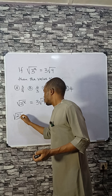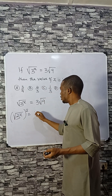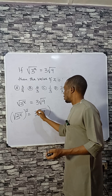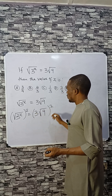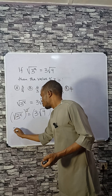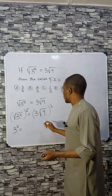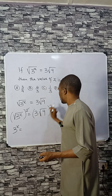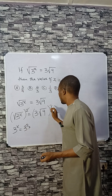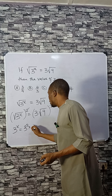If you take the square of both sides, that would give: on the left side, 3 raised to the power x; and 3 root 9 also takes the square. That would leave 3 raised to the power x on the left, and 3 squared times 9 on the right.